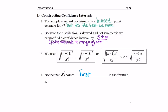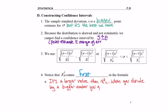And the reason for that is it's a larger value than chi squared left. And when you divide by a bigger number, you get a smaller answer, which needs to come first in a confidence interval.